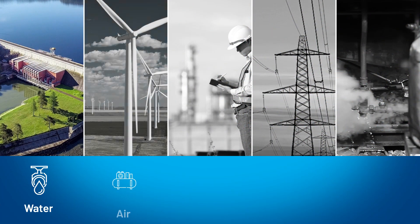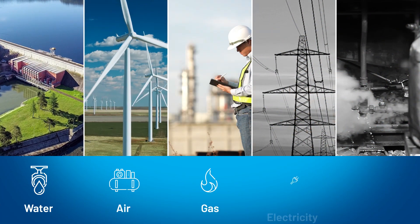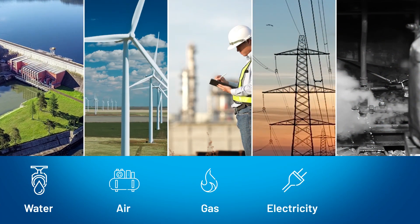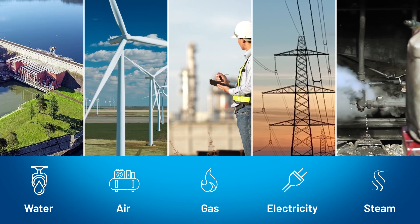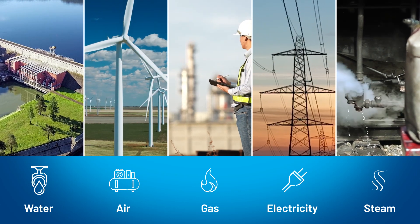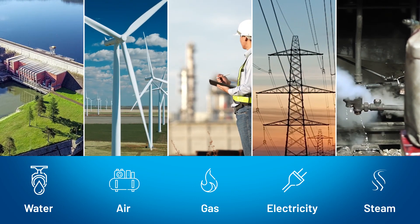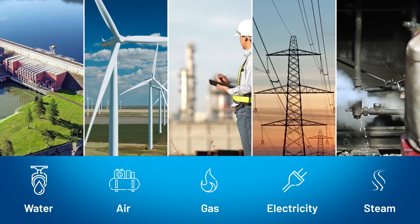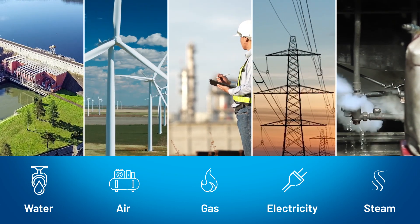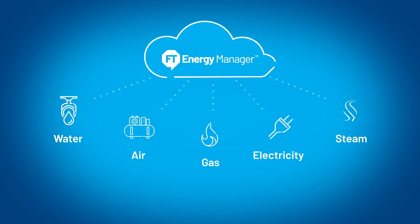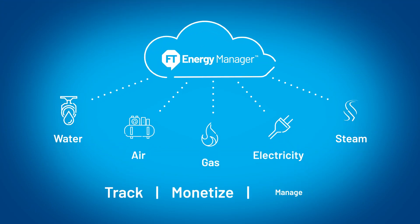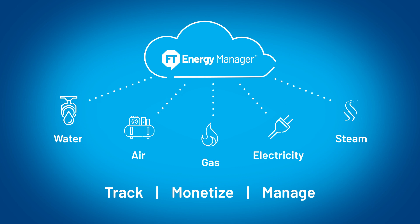Water, air, gas, electricity, and steam are critical cost inputs to manufacturing processes that often go untracked. With Factory Talk Energy Manager, you're able to track, monetize, and manage these costs to give your enterprise a strategic advantage.